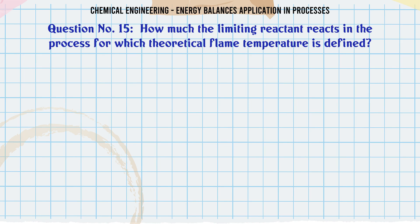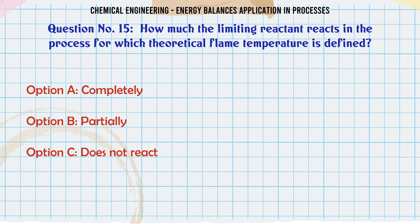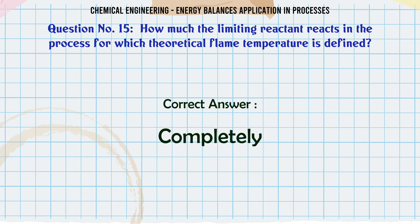How much does the limiting reactant react in the process for which theoretical flame temperature is defined? A: Completely. B: Partially. C: Does not react. D: None of the mentioned. The correct answer is completely.